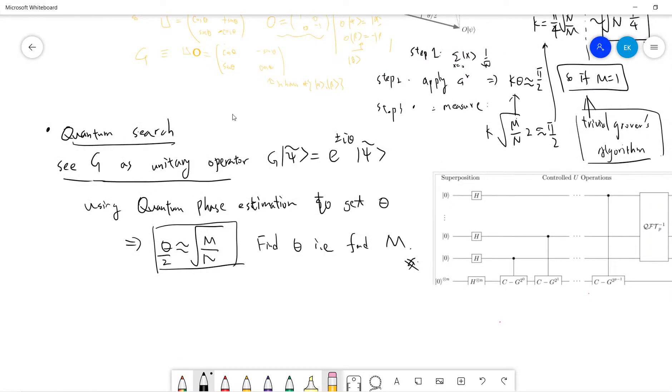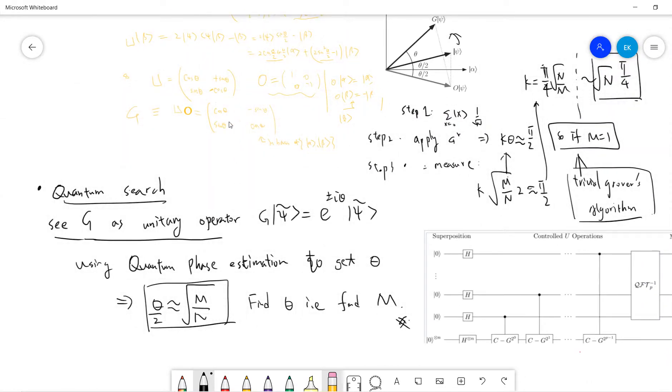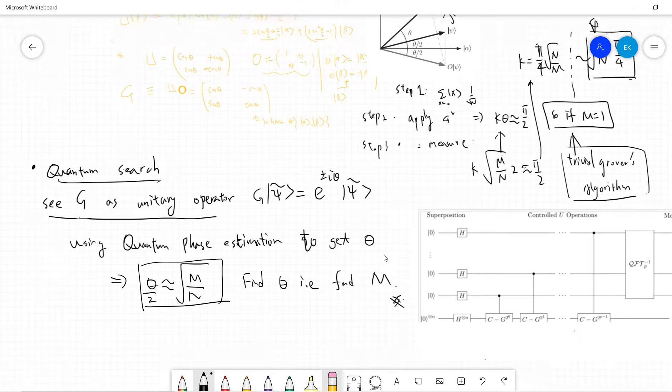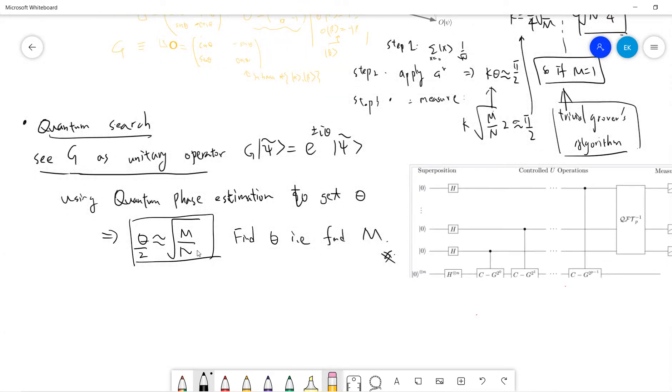So the quantum search algorithm is that we can see this G. This G is a rotation operator, basically 2D rotation, so this one can view that G is a unitary operator. And then you want to prove that the eigenvalue is e^(±iθ). So θ/2 ≈ sqrt(M/N).